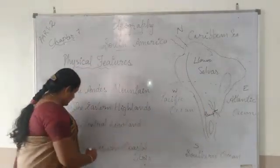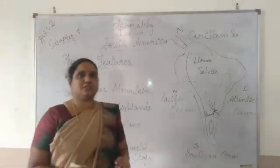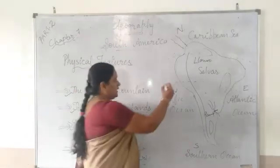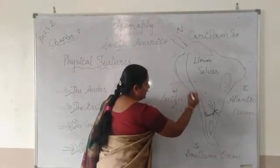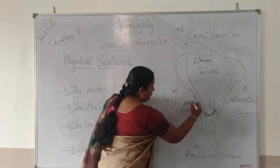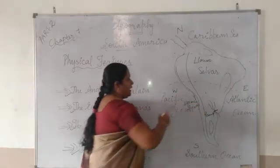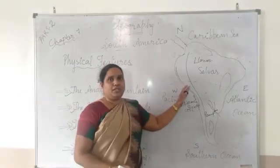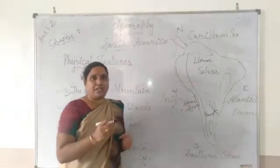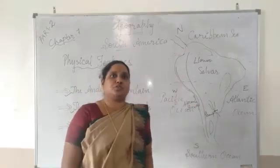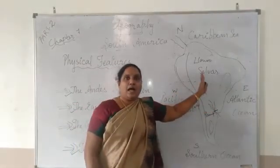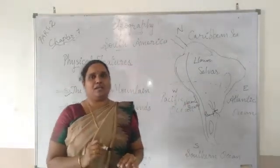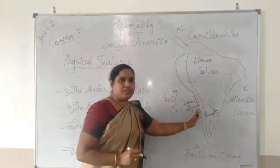Coming to the last one — the Western Coastal Strip. The western coastal strip is the most narrow coastal area in the world. It can be seen here. And here lies the Atacama Desert. The western coastal strip comes between the Pacific Ocean and the Andes Mountains.